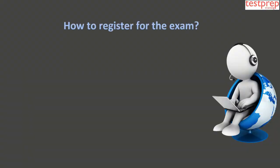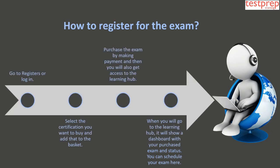How to register for the exam. To register, follow these steps: 1. Go to Register or Login. 2. Select the certification you want to buy and add it to the basket. 3. Purchase the exam by making payment, and you will also get access to the Learning Hub. 4. When you go to the Learning Hub, it will show a dashboard with your purchased exam and status. You can schedule your exam here.